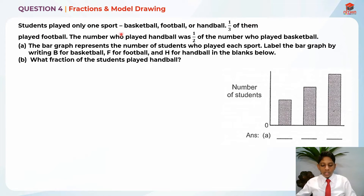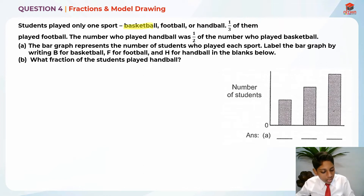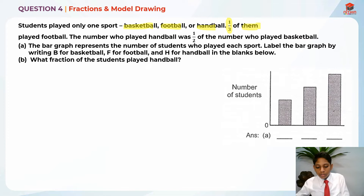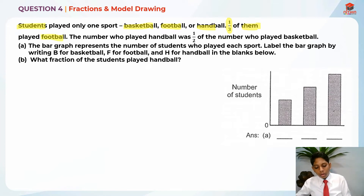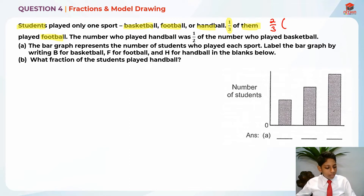Students play only one sport: basketball, football, or handball. So there are three sports. One third of them — 'them' basically refers to all the students who played these three sports — one third of them played football. This leaves another two thirds behind, which is basically basketball and handball, because those are the other two sports left.